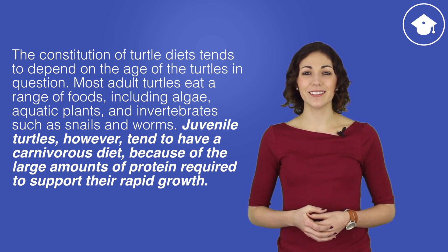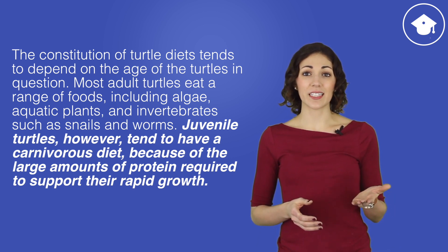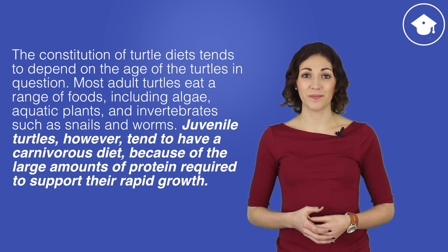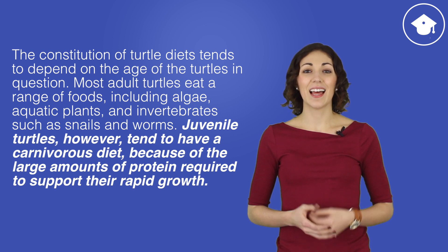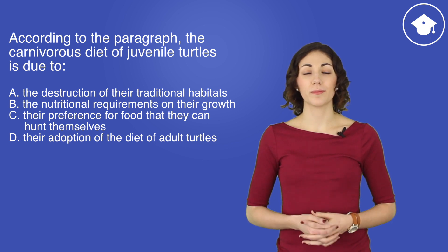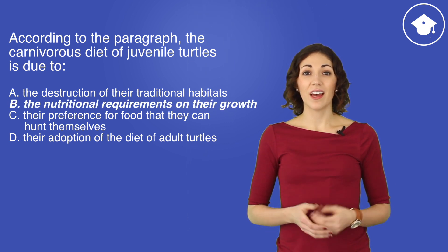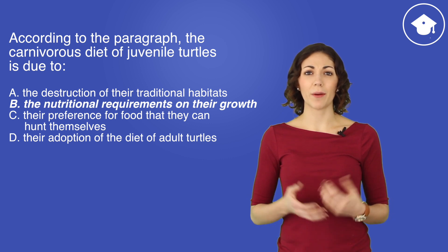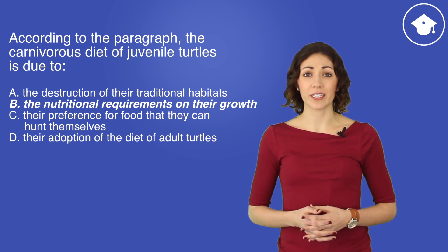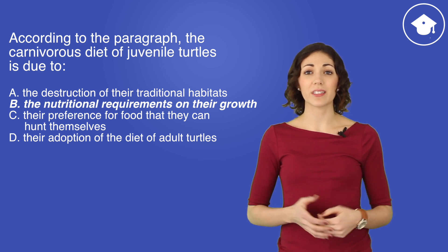Why is that important? Because that sentence contains everything we need to answer this question. According to the sentence, juvenile turtles have a carnivorous diet because they need a lot of protein to grow. Let's compare that to the answers — which of these talks about protein or growth? That's right, it's B. None of the other answers fit the information that we found in the sentence. Notice that we did all of this without knowing what 'carnivorous' meant. We simply looked for the word and used the information we found to answer the question.